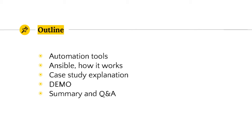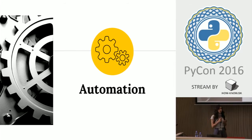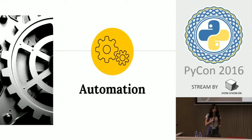Automation or automatic controls are tools with minimum or reduced human intervention. We always need some way to do repetitive jobs automatically. We use automation in IT because we deploy machines, install applications, and want to configure them so they can work together.